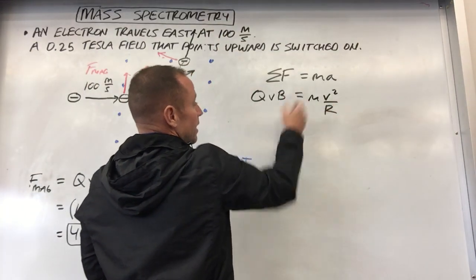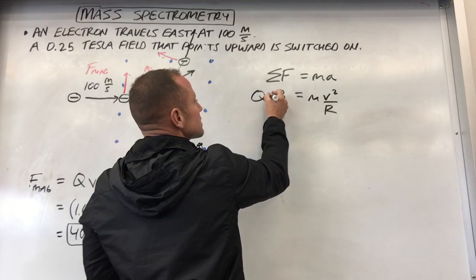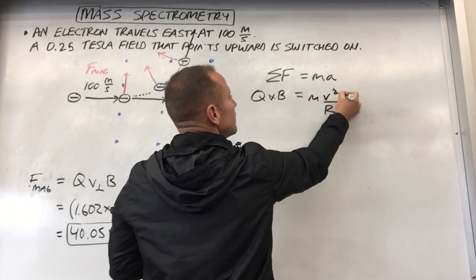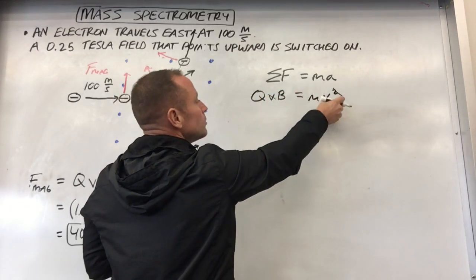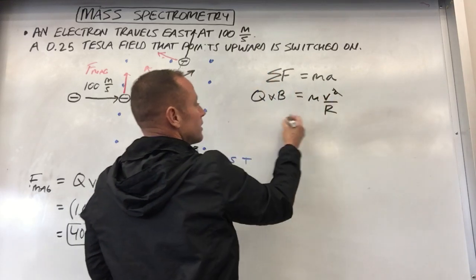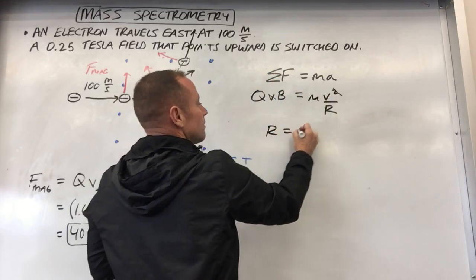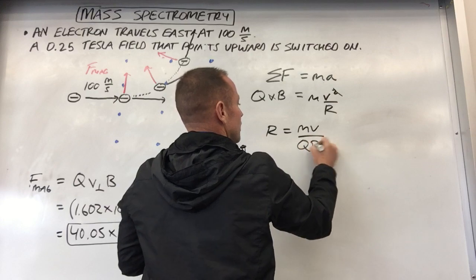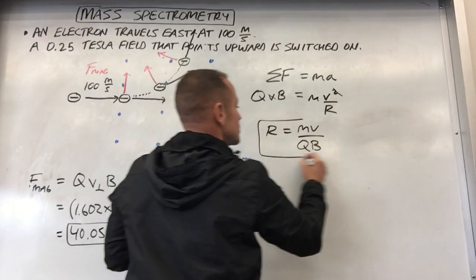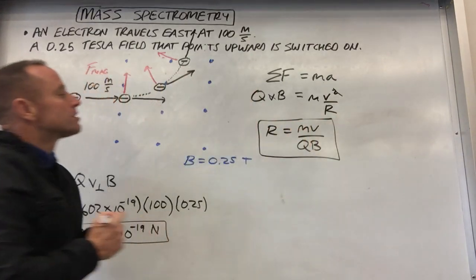And so what we can do with this is solve for the radius of curvature, which tells you how sharply it bends. So let's just solve for r. Well, you'll see one of the v's cancels here. And then what we'll do is bring the r over and the qB under. So you'll get r equals mv over qB. This is the radius of curvature.